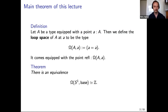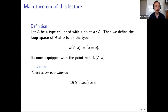Let's recall what the loop space of the circle is. For an arbitrary type at the base point a, it's just the type of identifications from a to itself, and it always comes equipped with the reflexivity identification. One of the things we do in homotopy type theory is characterize identity types or compute loop spaces of any type we encounter, and the circle is one of the most prominent examples.